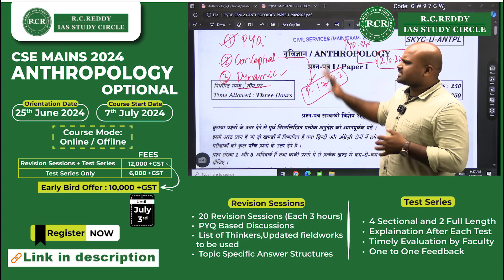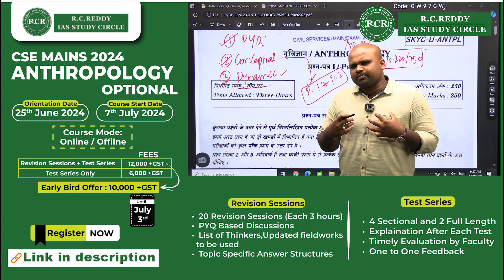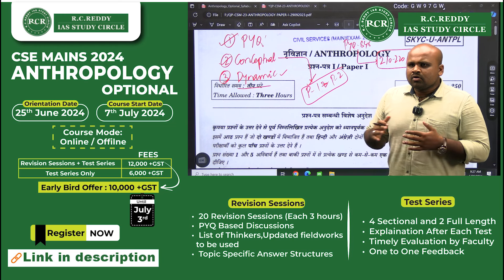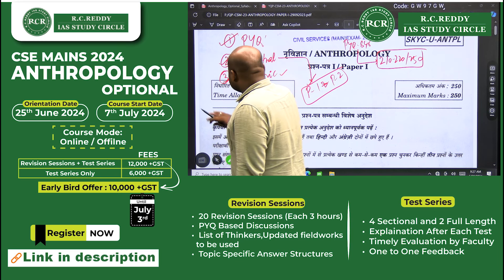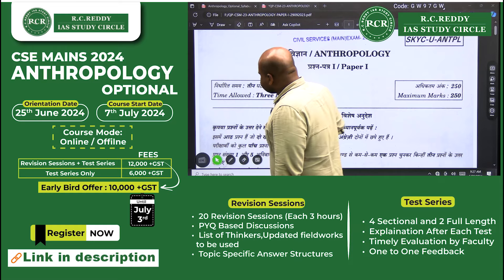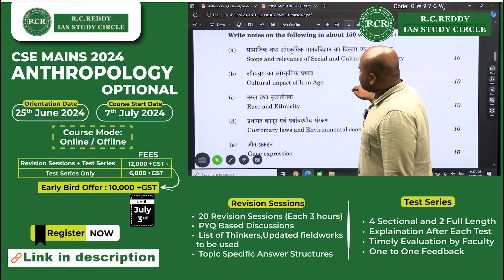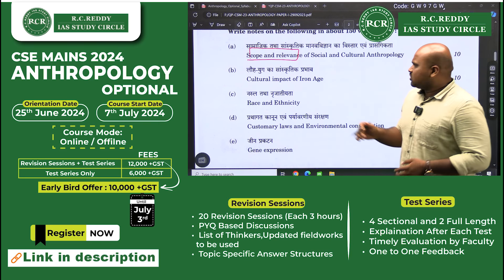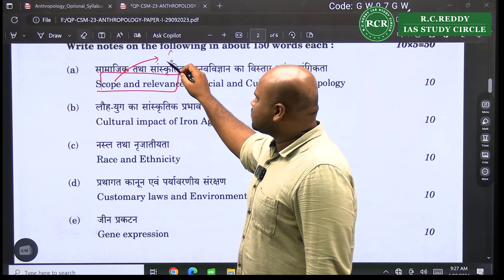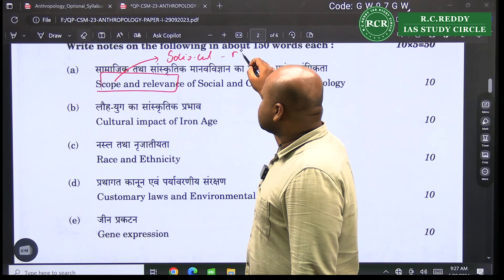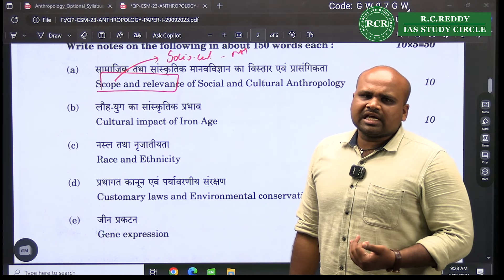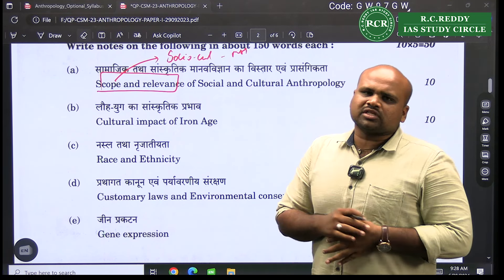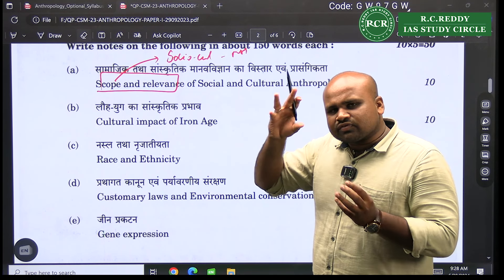With that basic understanding about the learnings from 2023 for 2024 Mains, we will have a brief discussion about the paper. Looking at the first question — it asks about the scope and relevance of social and cultural anthropology. Scope fundamentally means all of the syllabus of socio-cultural anthropology: be it marriage, family, kinship, political organization, economic organization, or religion — that is what is the scope of socio-cultural anthropology.